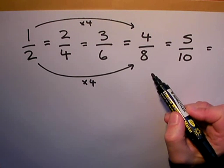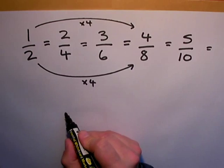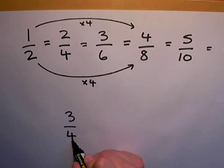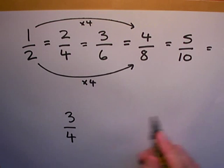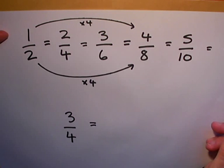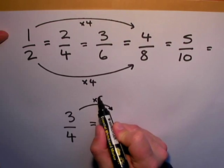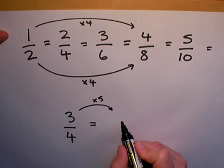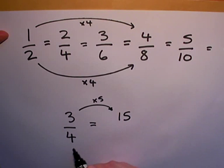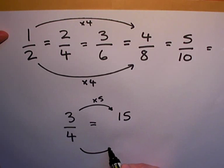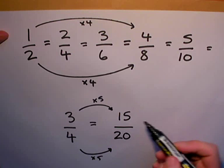I can do the same thing with a different fraction. Let's take three quarters, for example. Now to find an equivalent fraction, if I multiply, for example, by five, three times five is fifteen. If I do exactly the same to the bottom number, multiply by five, I end up with twenty.